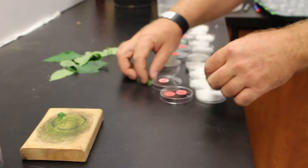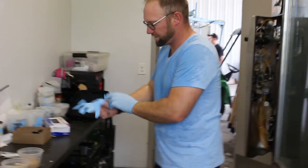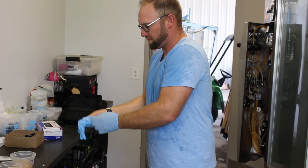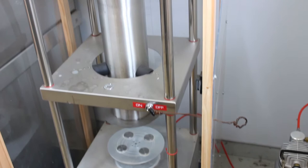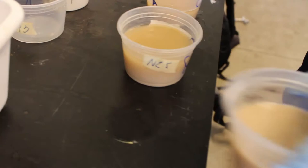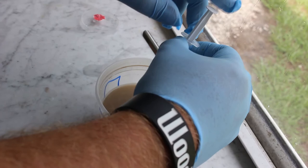Here are some mites that we've raised on bean plants. We transfer them onto our bean discs and then take them over to a room where we house a Potter spray tower. This is a unique piece of equipment because we can take a known concentration and quantity of a given chemical pesticide and apply it in a very uniform manner across a leaf surface with a very specific and precise dose.